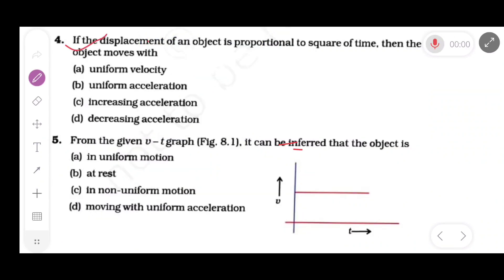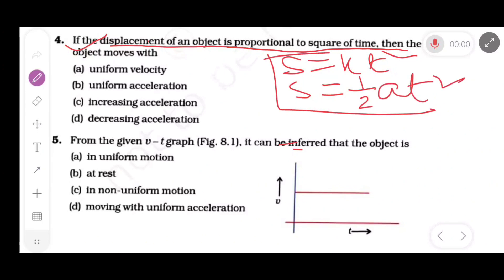Now question number 4. If the displacement of an object is proportional to the square of time, that is s = some constant × t². Now the displacement of a particle starting from rest is s = ½at². Compare these two equations, we get ½a = k. Therefore acceleration = 2 × constant, so it is also a constant. Therefore acceleration is constant. The option B, uniform acceleration, is the correct option.